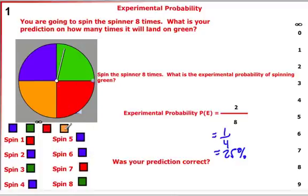Also, if you take a look at the orange, orange didn't show up once. So the experimental probability of orange was zero.